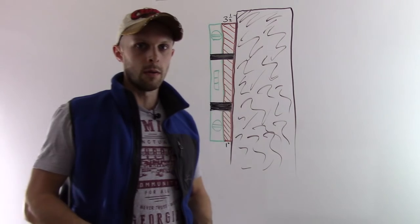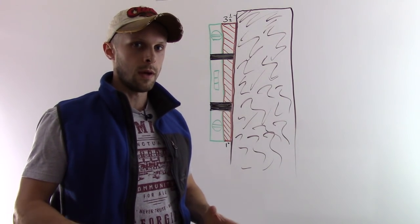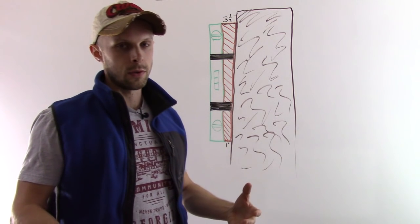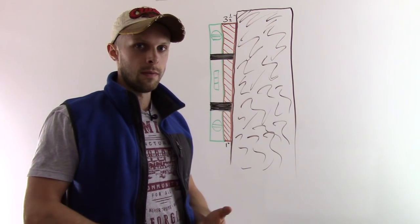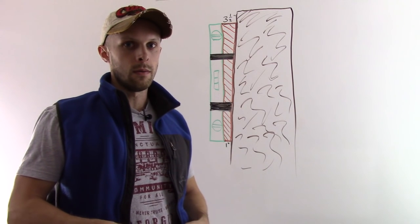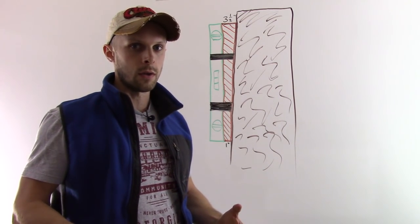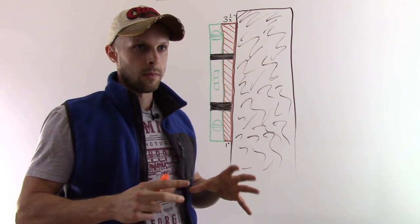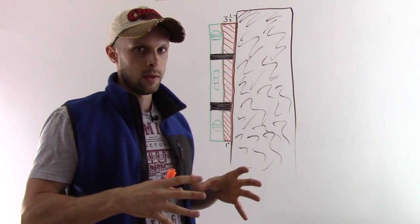Another way to go up multiple stories without relying so much on the taper is you can actually frame the structure previously to building your cob walls. So you could have a timber frame structure which is load-bearing, supporting your roof, kind of like a skeleton to the building.